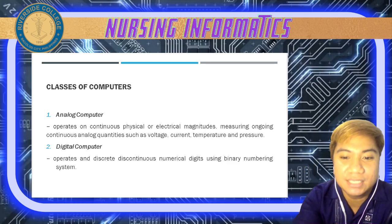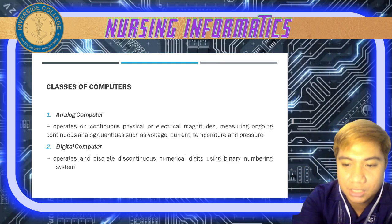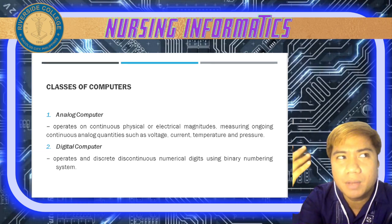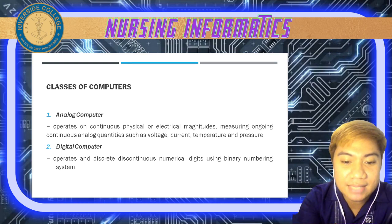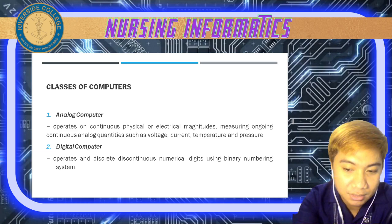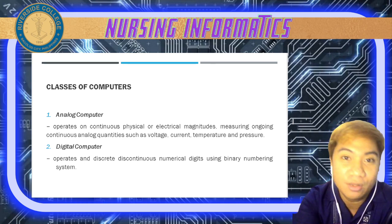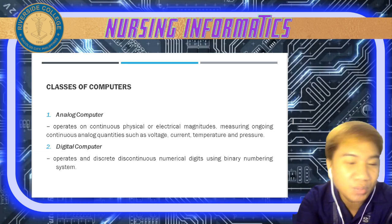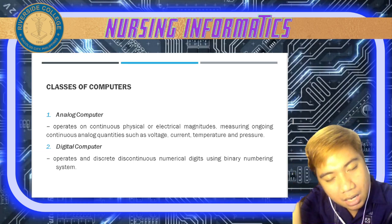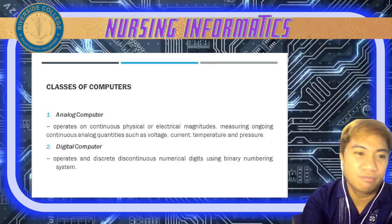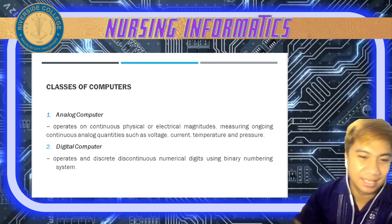We also have the digital computer, which operates in discrete discontinuous numerical digits using a binary numbering system. Data is represented by numbers, letters, and symbols rather than waveforms. One example is the computer used in nursing stations for charting — digital computers are used at the nurse station for requesting medications and for charting.